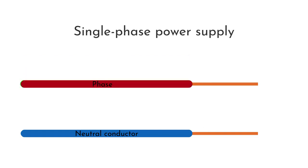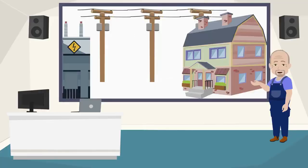If the circuit being used is single-phase, the electricity is supplied by means of two wires, one phase conductor and one neutral conductor with the 230-volt voltage between them.